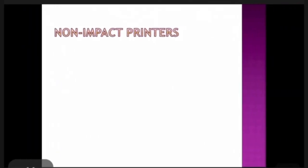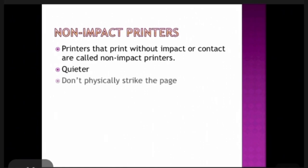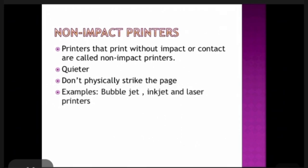Now we are going to see non-impact printers. In contrast to impact printers, non-impact printers work without getting in touch with the target medium. Printers that print without impact or without contact with the paper are called non-impact printers. They are quieter and do not physically strike the page. Examples are bubble jet, inkjet, and laser printers.